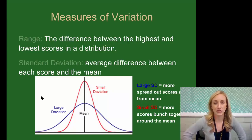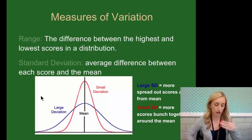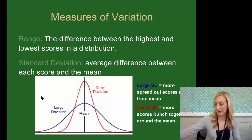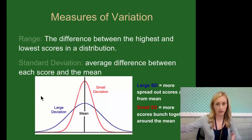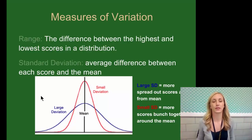The range is the difference between the highest and lowest scores in a distribution. So if scores range from 42% all the way up to 98%, the difference between the lowest and highest score would be your range.